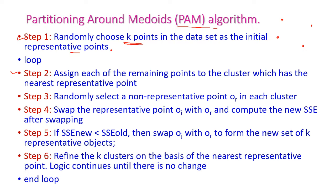Step two: assign each of the remaining points to the cluster with the nearest representative point. If a point is closer to one center, it is assigned to that cluster; if closer to another, it goes to that cluster. Step three: randomly select a non-representative point OR in each cluster. Step four: swap the representative point OI with the non-representative point OR, and compute the new SSE.